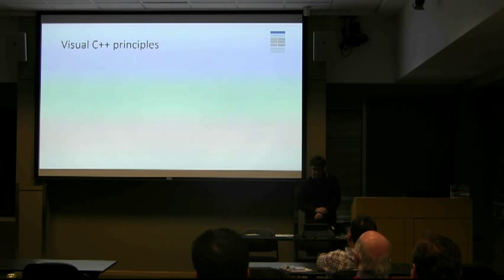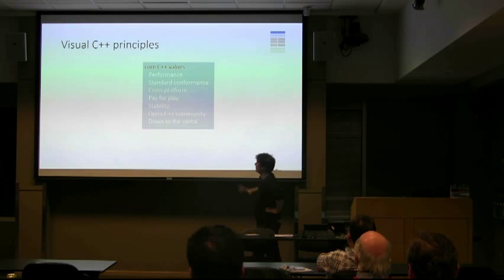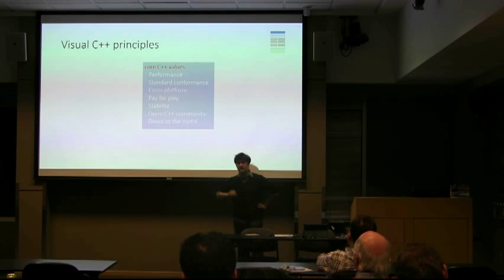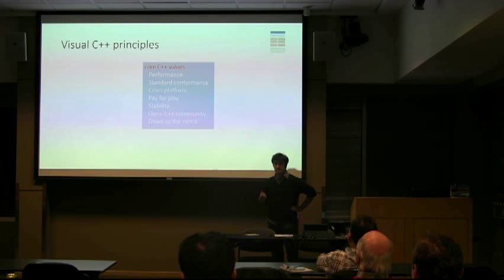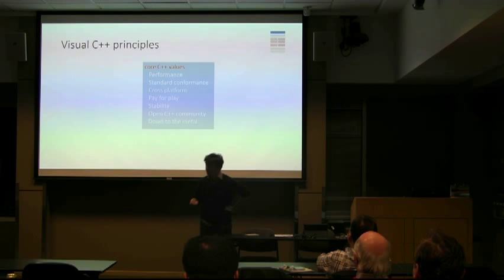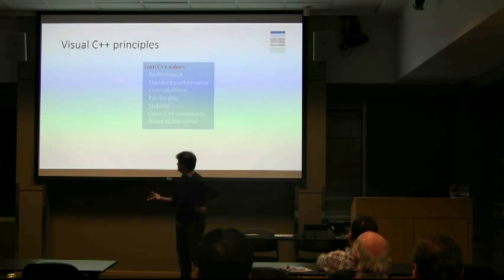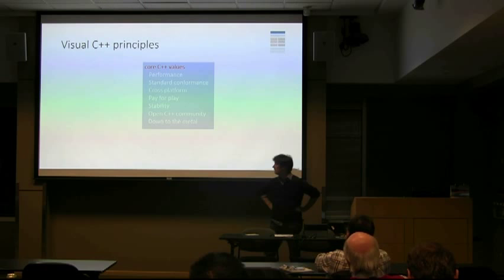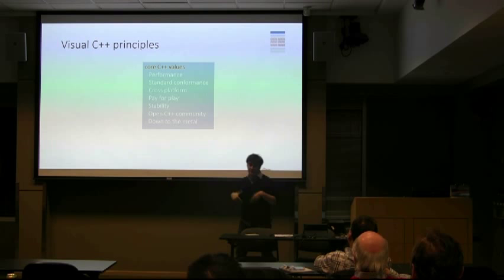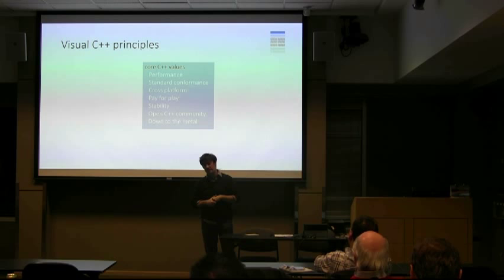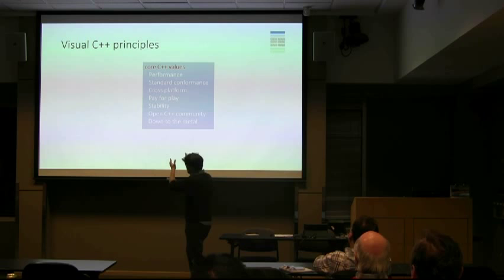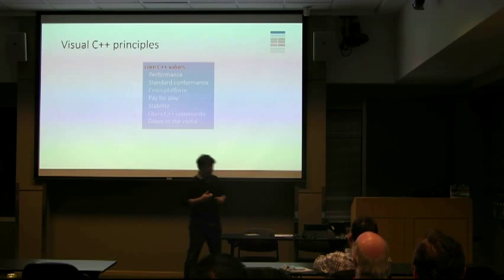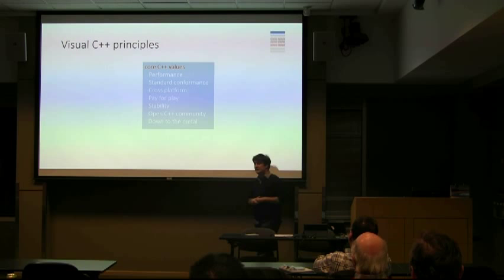One of the key things I care about in C++ is to stay true to the core C++ values: performance — you choose C++ for performance — standard conformance, cross-platform development. You want to pay for what you choose to use, basically. Stability. The open C++ community. And the ability to go down to the metal. I notice that whenever we move away from these core values, you guys always get mad at us, very precisely. So I want to stay true to these things as much as possible.